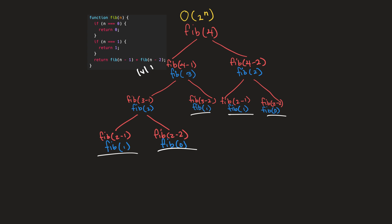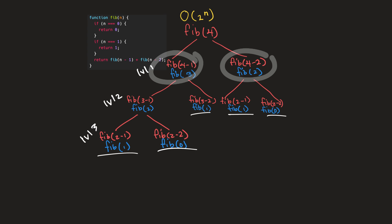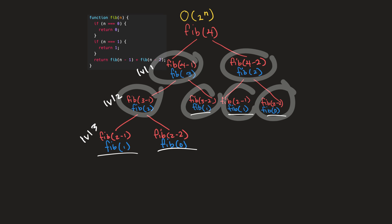So we can write that out: level one, level two, and level three. For this first level, we're calling the fib function two times. And for this second level, we call our fib function four times. So at level one we make two calls to the Fibonacci function, and at level two we make four calls. Two is the same as two to the power of one, and four is the same as two to the power of two. As you can see, our exponents correlate with our levels.